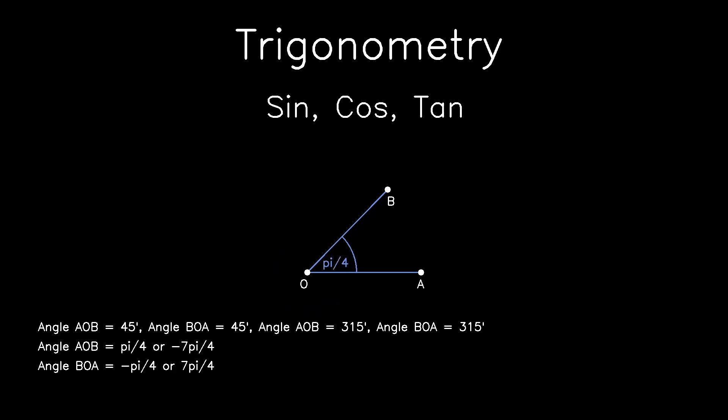But when it comes to radians, angle AOB equals pi over 4 or it equals negative 7 pi over 4. But angle BOA equals negative pi over 4 or 7 pi over 4. Because radians is a vector, so it has direction.